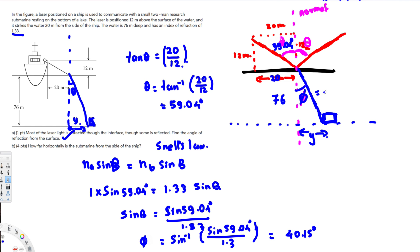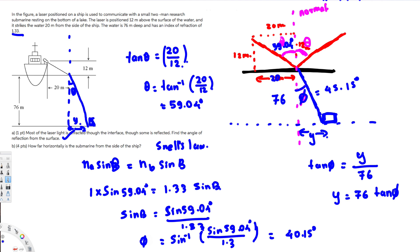Now we use tan(phi) = opposite over adjacent, where the opposite is y and the adjacent is the depth of 76 meters. So y = 76 · tan(phi) = 76 · tan(40.15°), which gives us 64.1 meters. So that distance through the water is 64.1 meters.